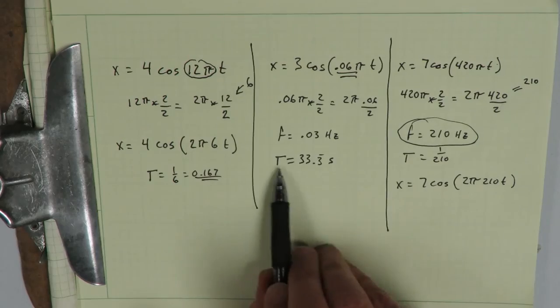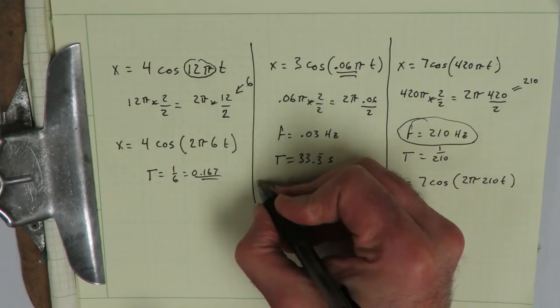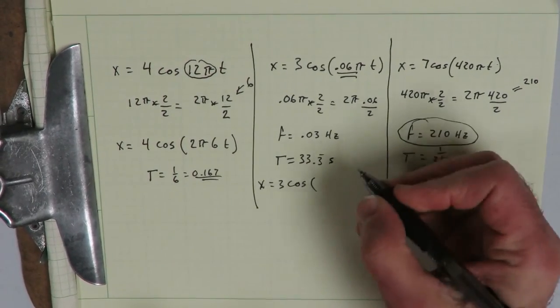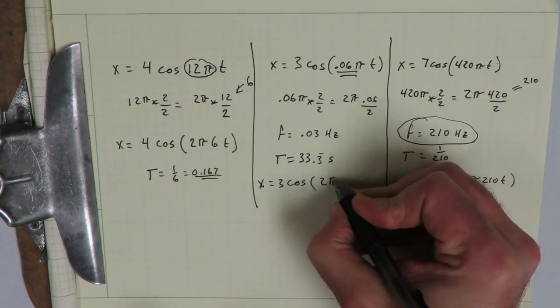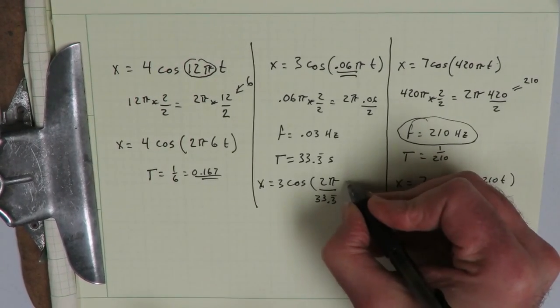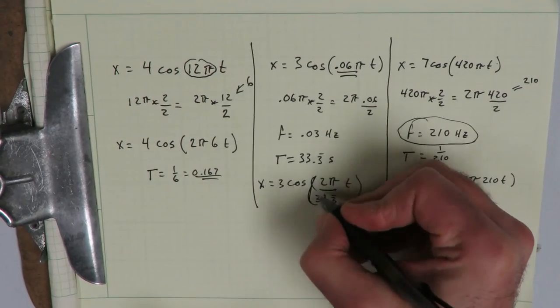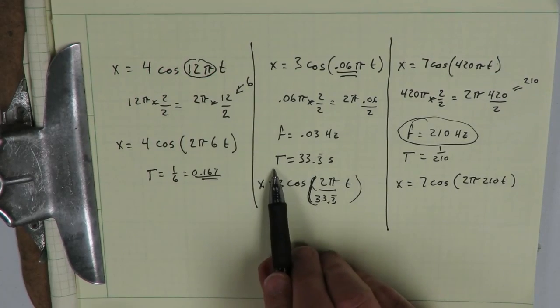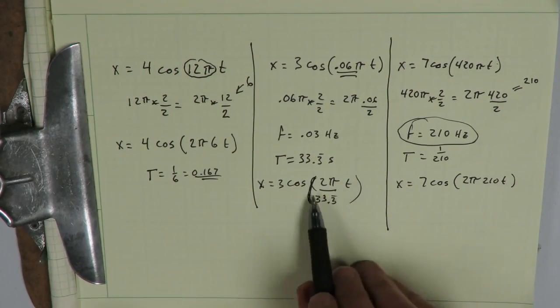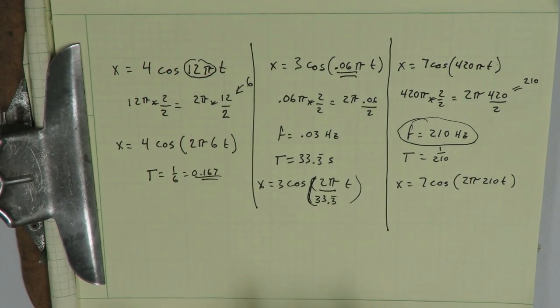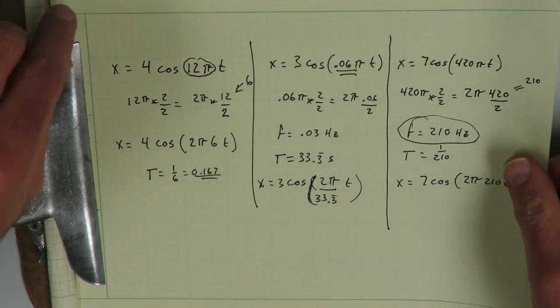If we're talking about a little tiny number like this, then the period makes more sense. And we should put this in the final form: x equals 3 cosine times 2 pi over 33.3 repeating times little t. And again, in this case where the period is so long, it's more intuitive to look at the equation in this form and say the period is 33.3 seconds. Alright, next we are going to move on to actually graphing one of these.